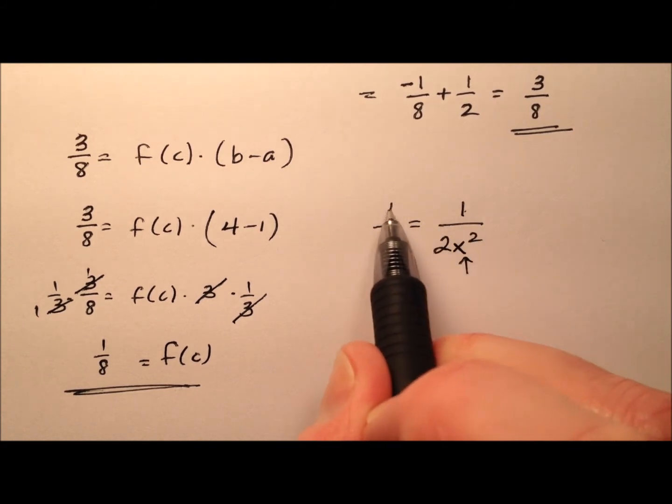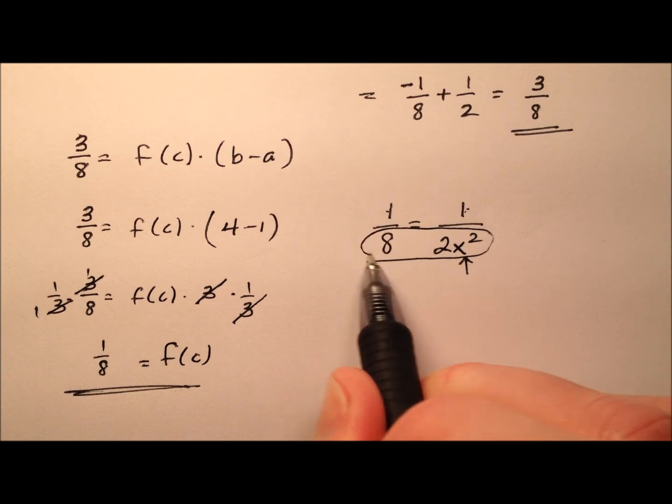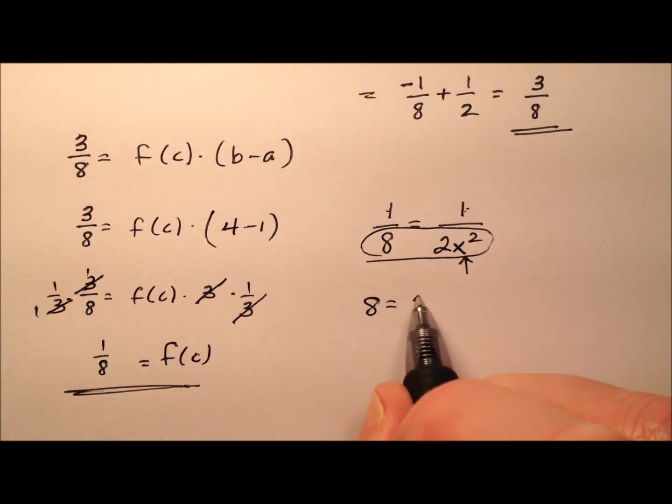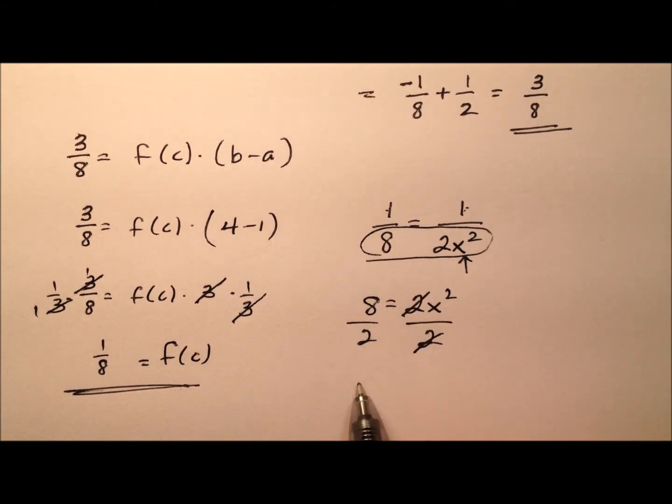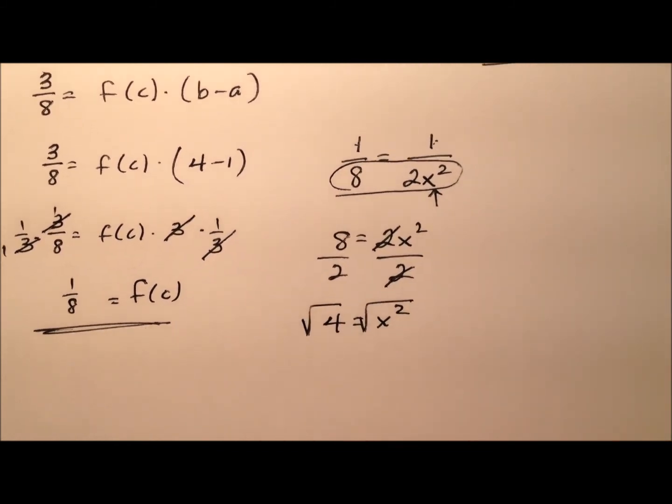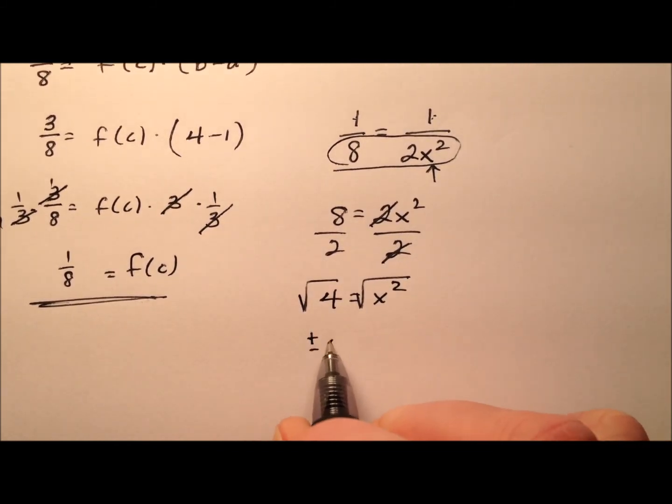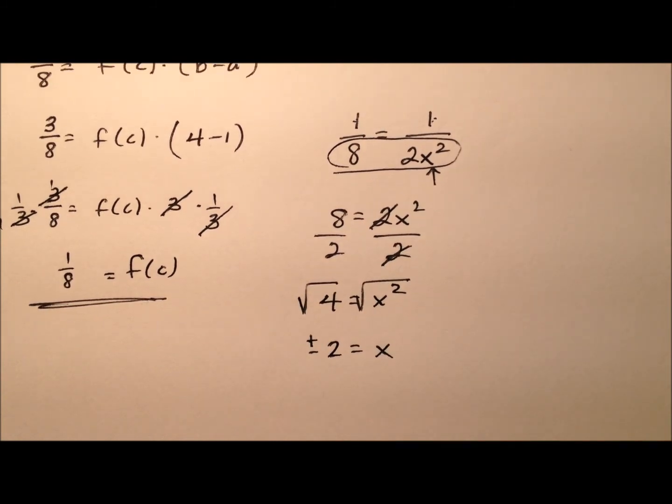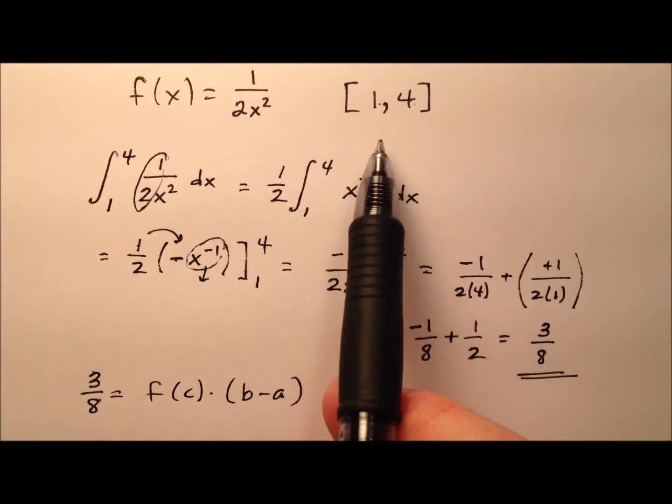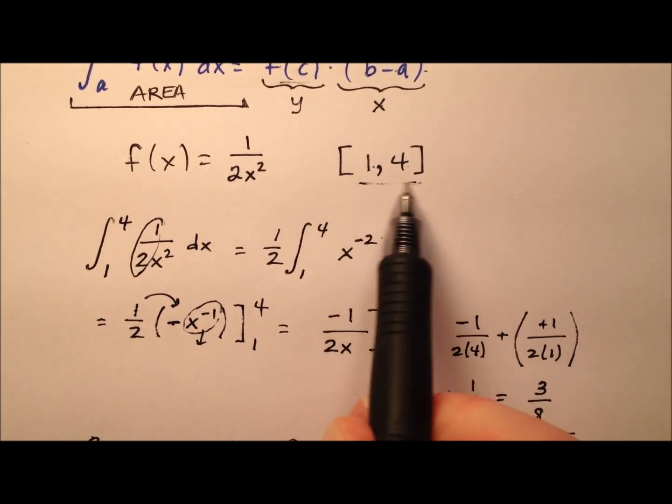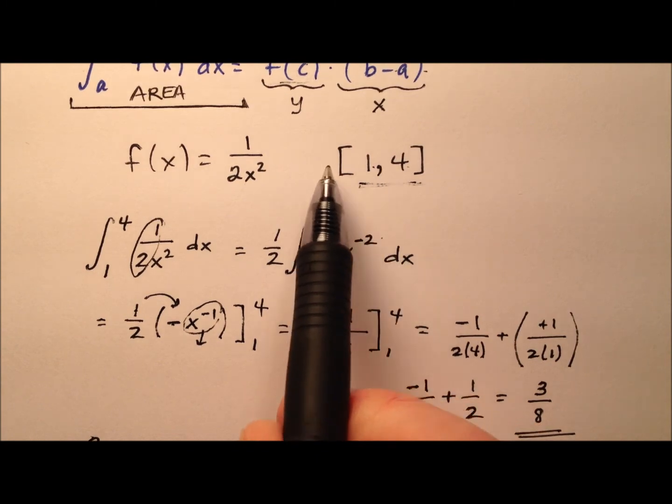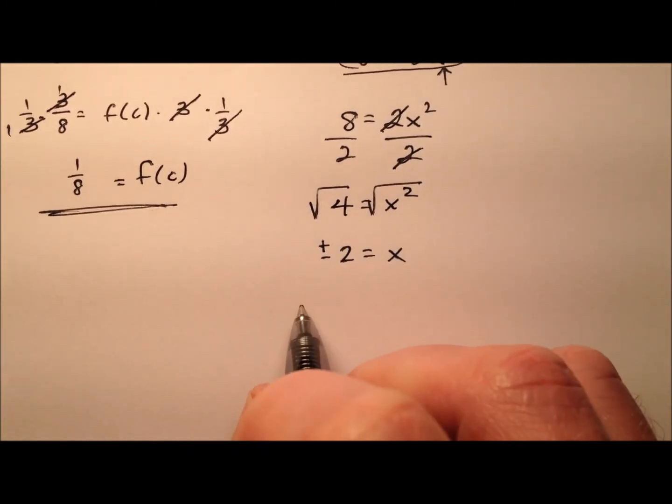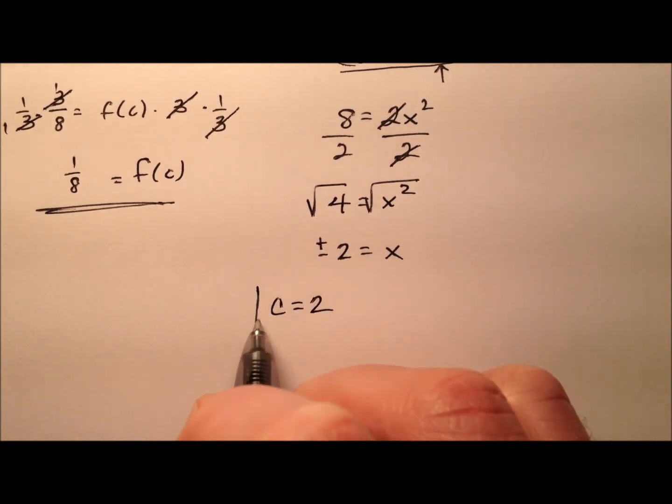So we have ones in both of the numerators, so really I'm just interested in setting eight equal to 2x squared. So let's go ahead and divide both sides by two. So I'll have four equals x squared. And then let's take the square root of both sides. So we'll have plus or minus two equals that x. Well, two separate values, a positive two and a negative two, but only one of those values plays nicely in our interval here. We only care about the positive two because the negative two is outside the interval. So this c value that we're looking for is positive two.